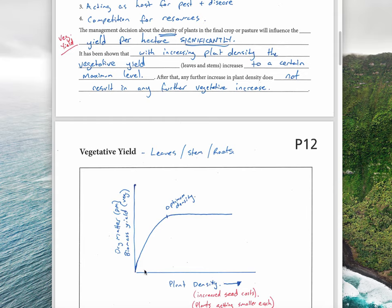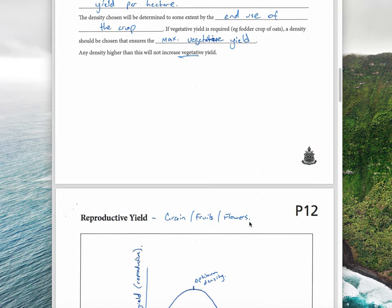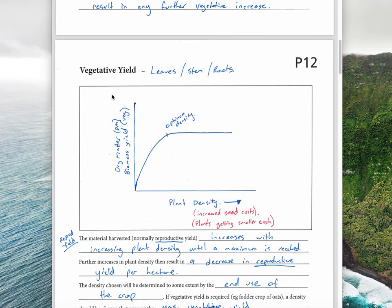It flat lines. So this is vegetative yield, which is basically the leaves, the stems, and the roots. The reproductive yield is the grain, the fruits, and the flowers. Basically, most of the plant is vegetative yield or vegetation.